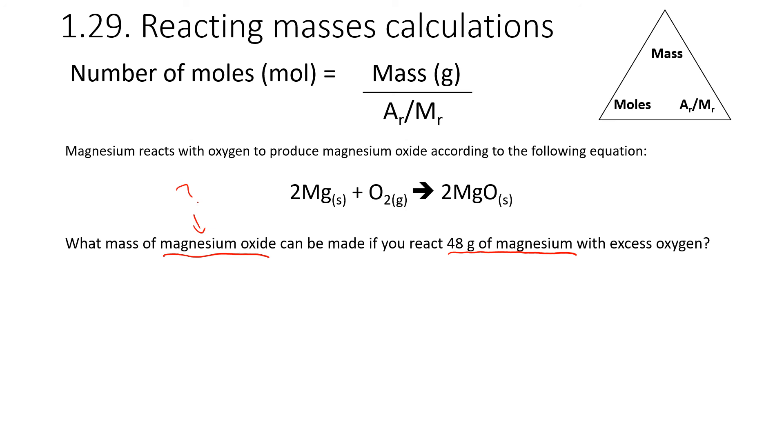Step two is going to be to calculate the moles of whatever we have the mass for. In this case, the magnesium. We're going to do moles equals mass divided by AR. The AR of magnesium is 24. We have two moles of magnesium.